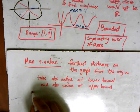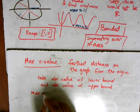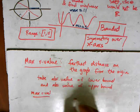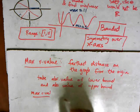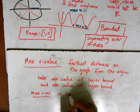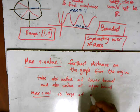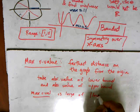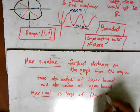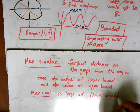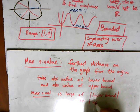And then the max r-value is the larger of these two. So it's the larger of the absolute value of the lower bound or the absolute value of the upper bound.